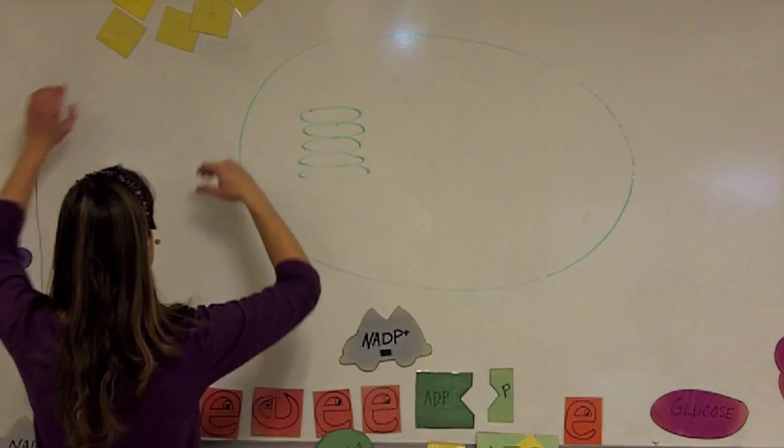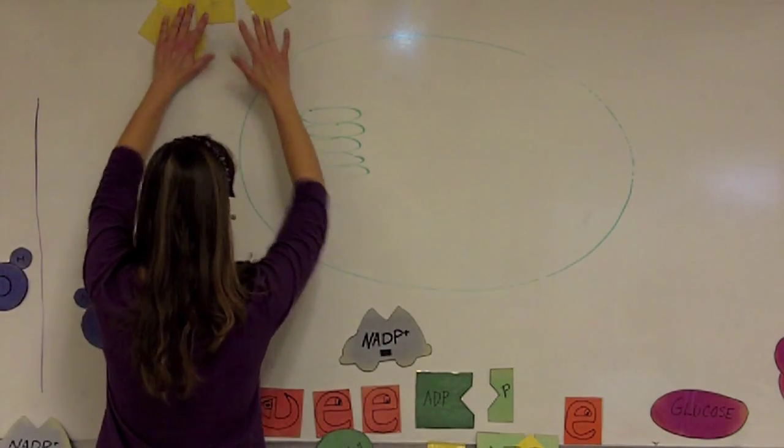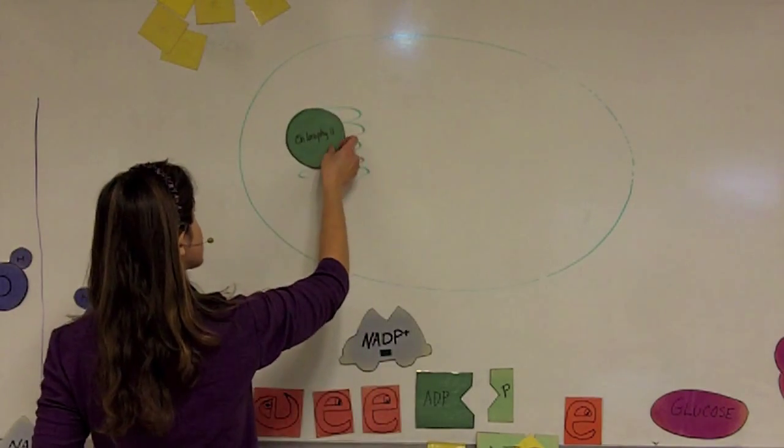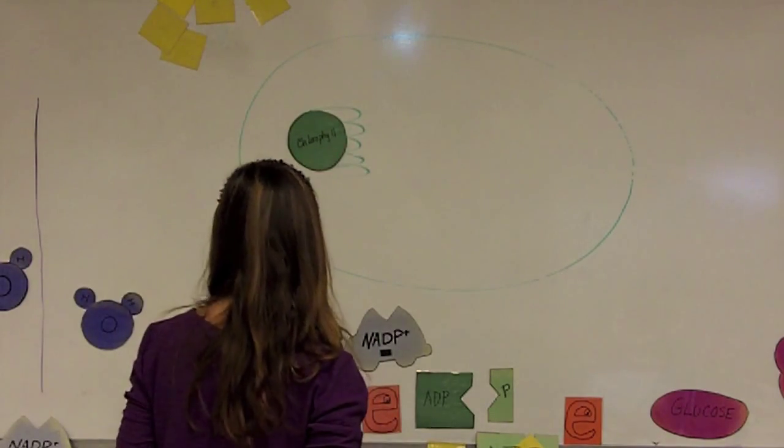During the process of the light-dependent reactions, we're going to start with energy from the sun. As the sun hits the leaf, it's going to hit molecules of chlorophyll that are located on the thylakoid membranes.